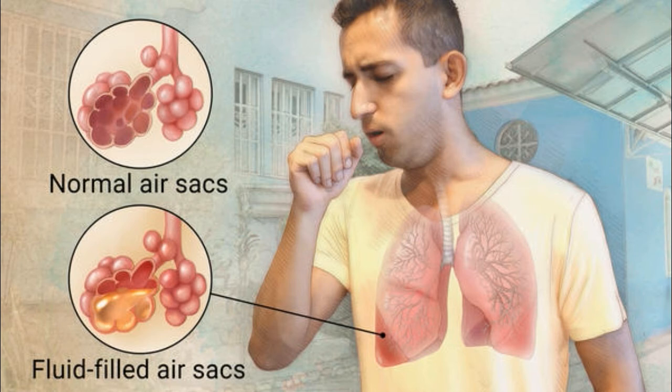Prevention: Preventing pneumonia in children is an essential component of a strategy to reduce child mortality. Immunization against HIV, pneumococcus, measles, and whooping cough (pertussis) is the most effective way to prevent pneumonia. Adequate nutrition is key to improving children's natural defenses, starting with exclusive breastfeeding for the first six months of life.